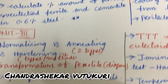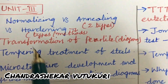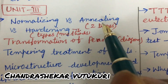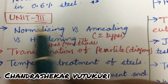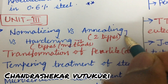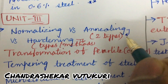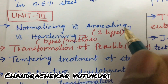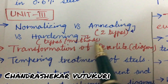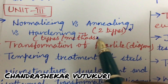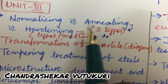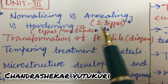Unit 3 is all about normalizing versus annealing, as well as hardening and their differences. Sometimes they may ask you to work out two types of annealing as well as hardening types and methods — this is very very important. From this part you will be getting one question for sure.